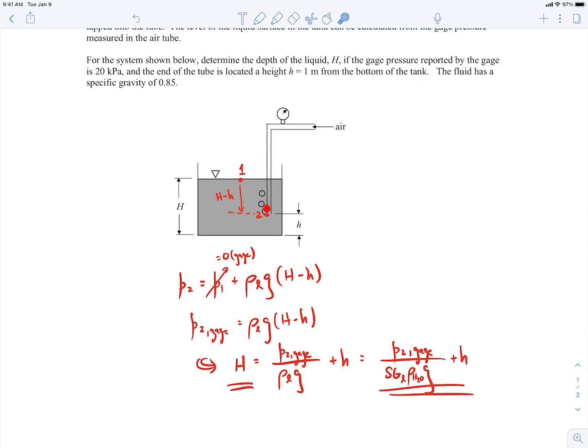Because it's a gas and the pressure doesn't vary much with elevation in a gas, p2 here is going to be the same pressure up here where the gauge is. So when you read the gauge, that's the pressure that we use here.